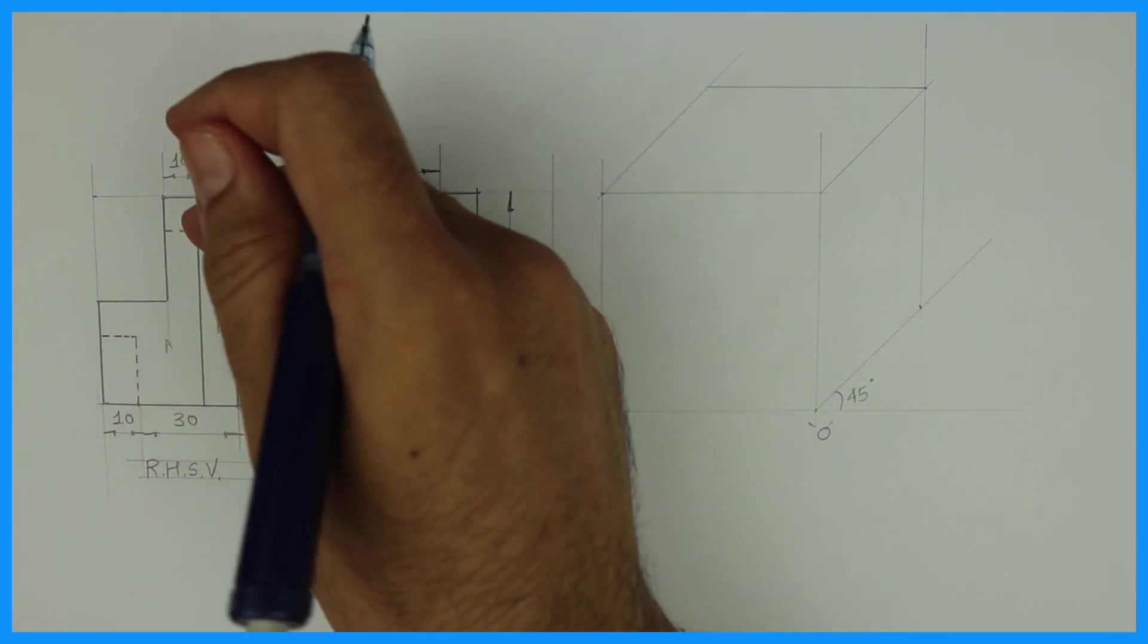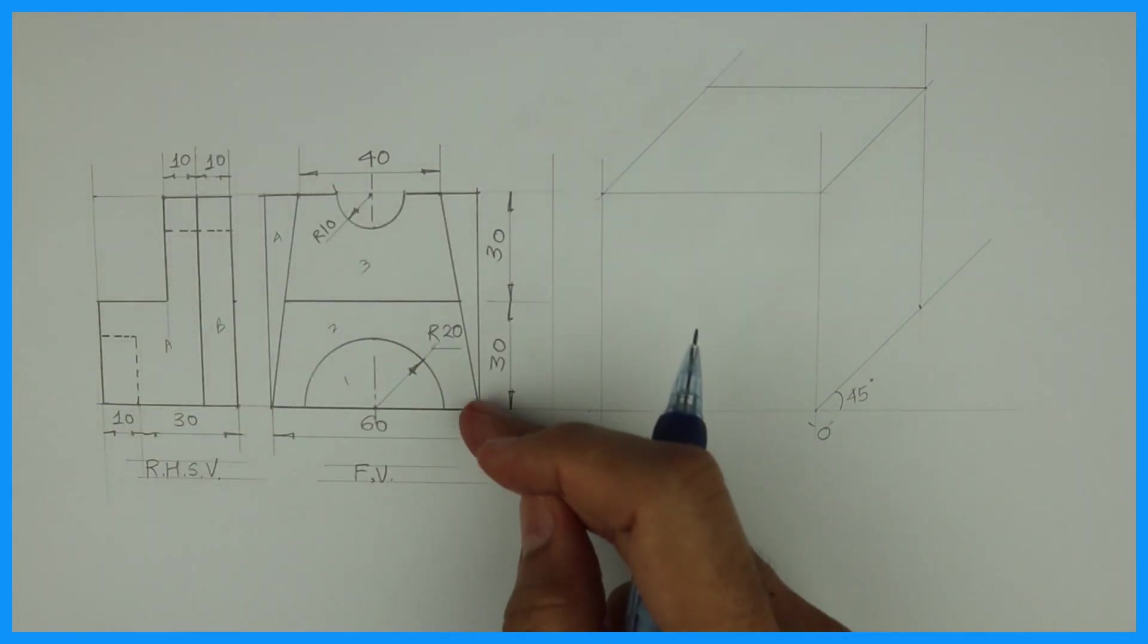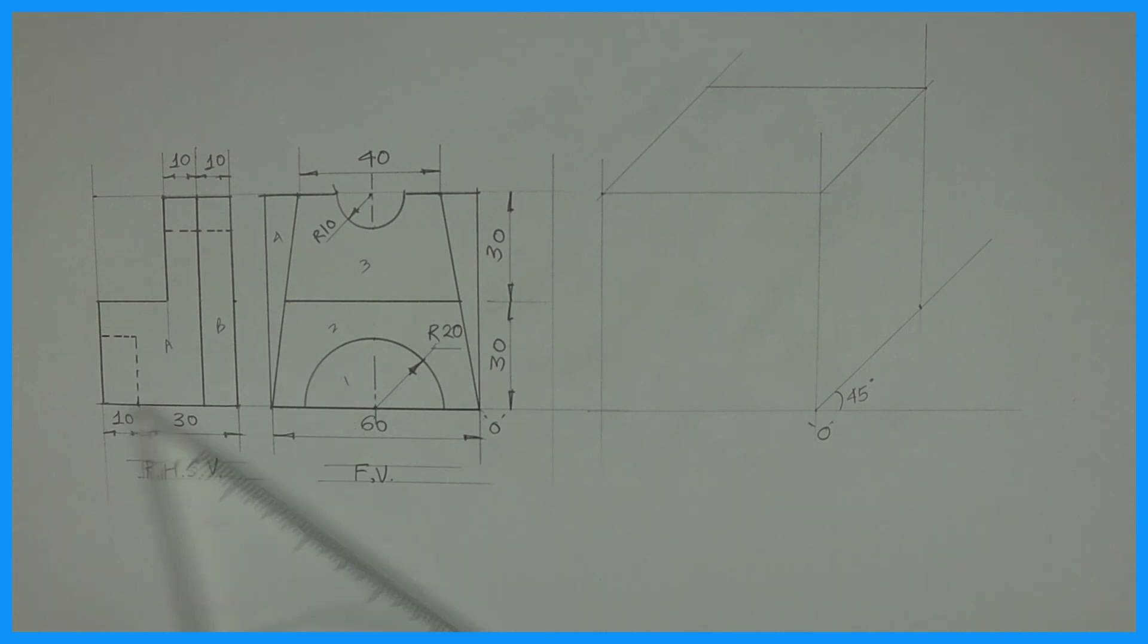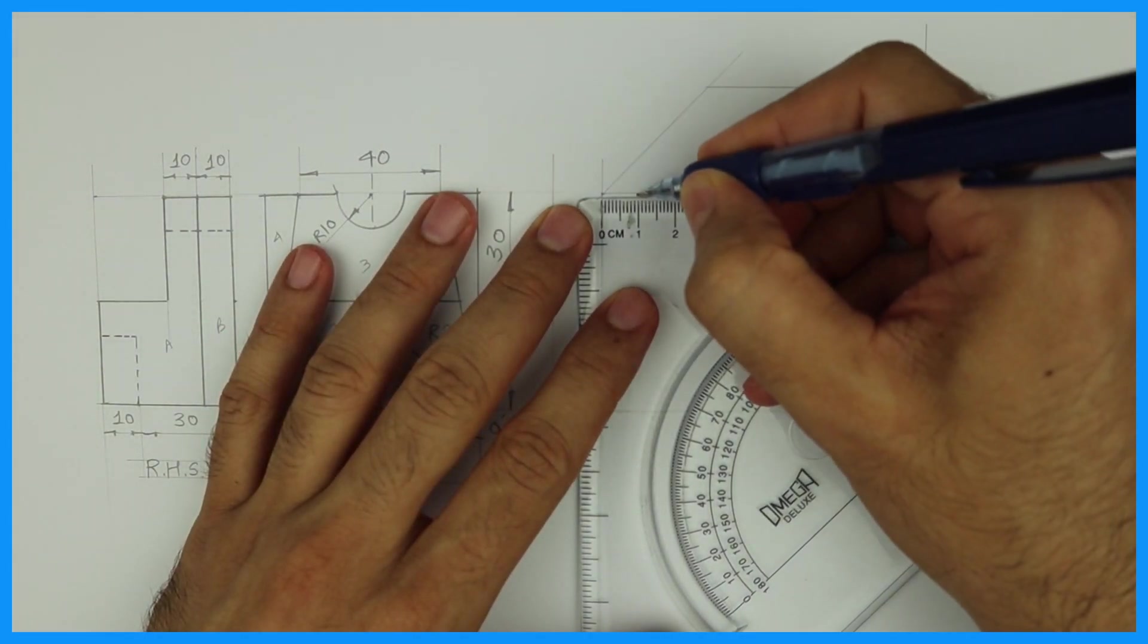So it makes sense to draw side view. But if you see here, this is straight and this is slope. So whenever you come across a slope, you should draw that slope first. Always remember, whenever you have a slope.